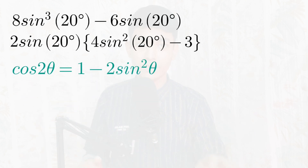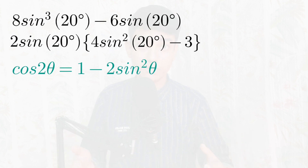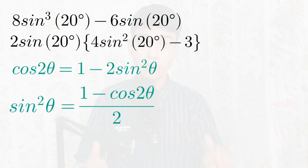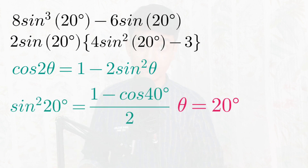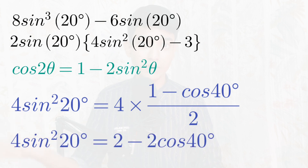Moving forward with cos(2θ) = 1 − 2sin²θ: if we isolate sin²θ, we get sin²θ = (1 − cos(2θ)) / 2. Replacing θ with 20°, sin²(20°) = (1 − cos(40°)) / 2. The main term in our original equation was 4 sin²(20°), so multiplying both sides by 4 gives 4 sin²(20°) = 2 − 2cos(40°).